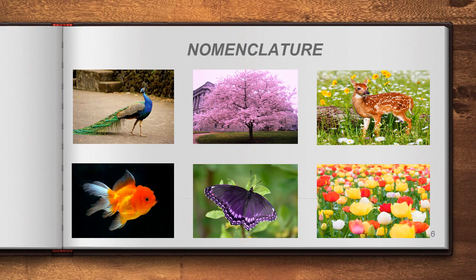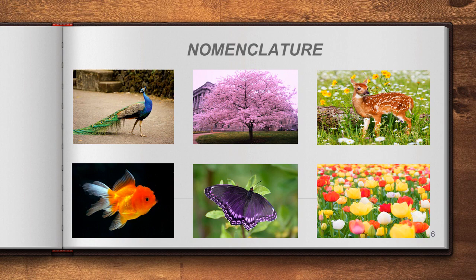Below the nomenclature title, I have displayed a few figures — peacock, cherry blossom, deer, goldfish, butterfly, tulip flower. We have identified each organism with its name, for example, differentiating peacock from goldfish by name. Giving one particular name to an organism is called nomenclature. Nomenclature is a Latin term that denotes naming.